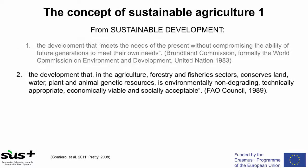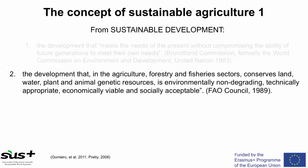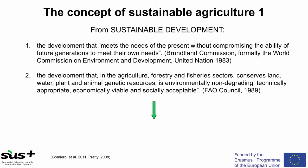Some years later, the FAO Council in 1989 defined sustainable development as the development that in agriculture, in forestry and in fisheries sectors, conserves the land, the water, plant and animal genetic resources, is environmentally non-degrading, technically appropriate, economically viable and socially acceptable. From those concepts derives the concept of sustainable agriculture and food system.